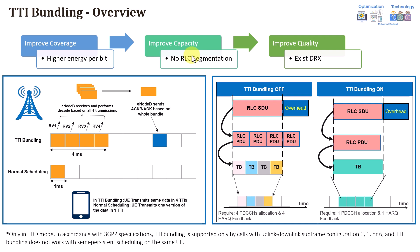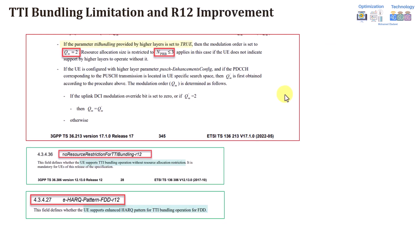Now let's see how to verify TTI bundling from UE logs and what Advanced TTI bundling means. One important limitation: once TTI bundling is triggered, per 3GPP, if the TTI bundling parameter from higher layers is set to true, the modulation order MCS will be set to QPSK — only 2 bits can be transmitted per resource element — and the uplink resource blocks will be limited to a maximum of 3 RBs. This severely limits uplink throughput when TTI bundling is active.